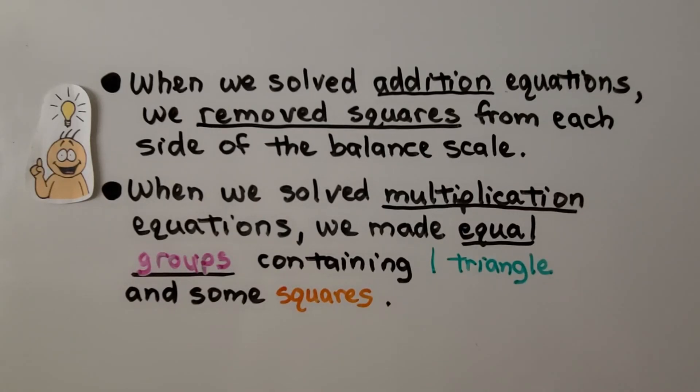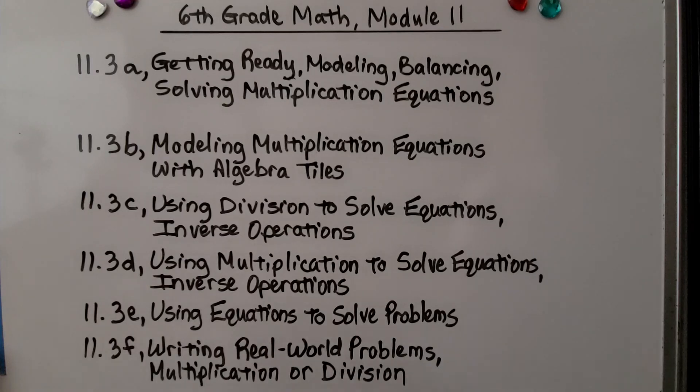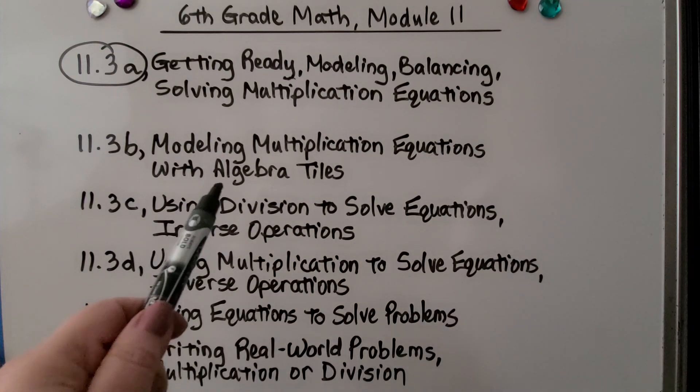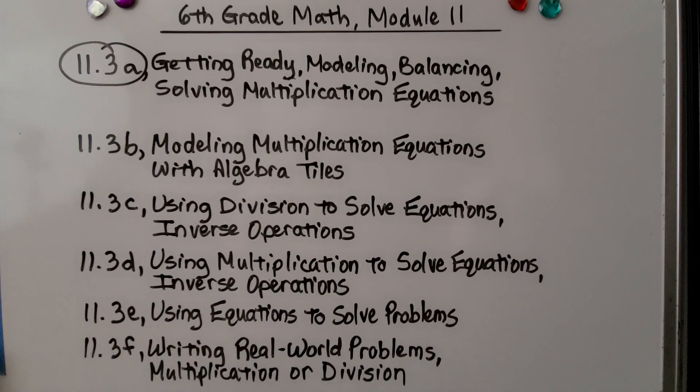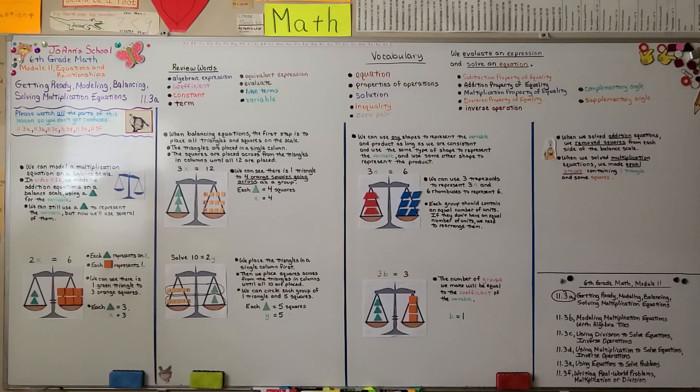When we solved addition equations, we removed squares from each side of the balance scale. When we solved multiplication equations, we made equal groups containing one triangle and some squares. Okay, we finished the first part of this lesson. We're going to move on to the second part, modeling multiplication equations with algebra tiles. I hope you have a really good and productive day, and I hope you'll join me for the next part of this lesson. Bye.